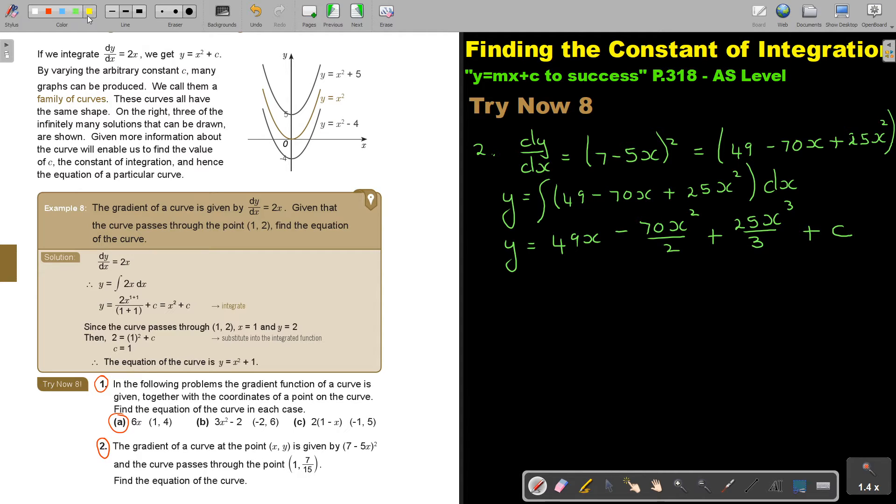Now, I'm going to substitute the point 1 and 7 over 15. And if I substitute it, don't forget that this is x and this is y. So in the place of y, I'm going to say 7 over 15 equals 49, 1 minus, I can simplify this already to 35, 1 squared. I'm going to leave this one first because it's going to give me an otherwise mixed fraction, and it's going to be 1 to the power 3 plus c.